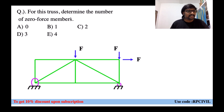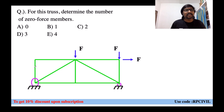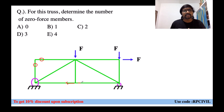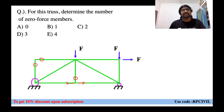Example 2: For the following truss, determine the number of zero force members. At a particular joint, the right-side member and the left-side downward member are non-collinear with no external load — first case — so those two members are zero force members. At another joint, three members are meeting; two are collinear and there is no external load, so the third non-collinear member is also a zero force member. The remaining members carry forces balanced by applied loads. The answer is three — option D.